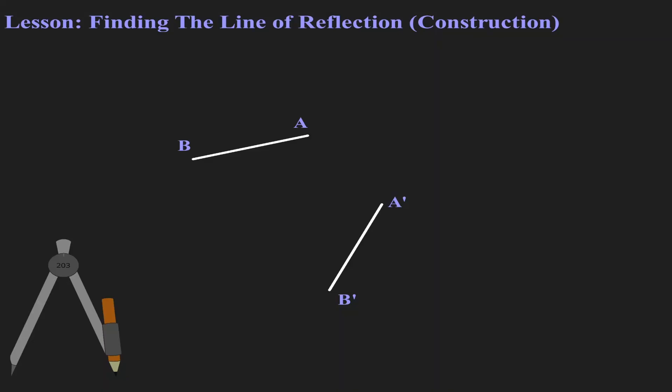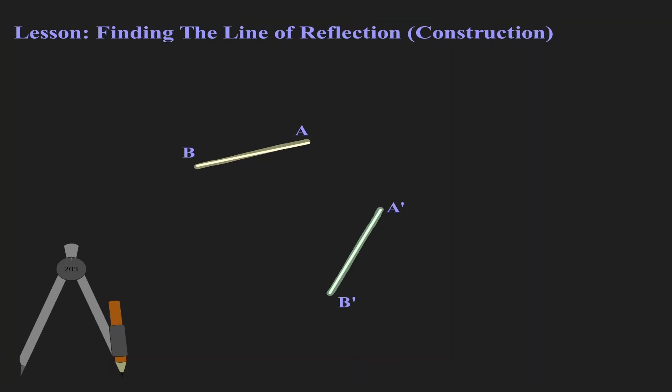Welcome. Today we're going to talk about the construction on how to find the line of reflection. Let's start by understanding the situation. We were given a line segment AB, and then this line segment got reflected and it landed on the image A'B'. What we want to find out is what was the line that it was reflected on.